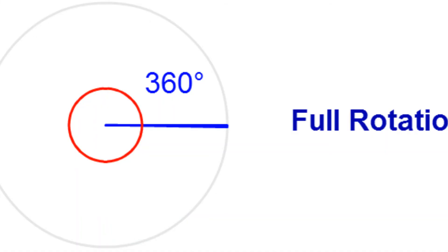A complete angle measures 360 degrees. For example, this clock. When a clock starts from 12 am and then returns back to 12 pm, it forms an angle of 360 degrees.